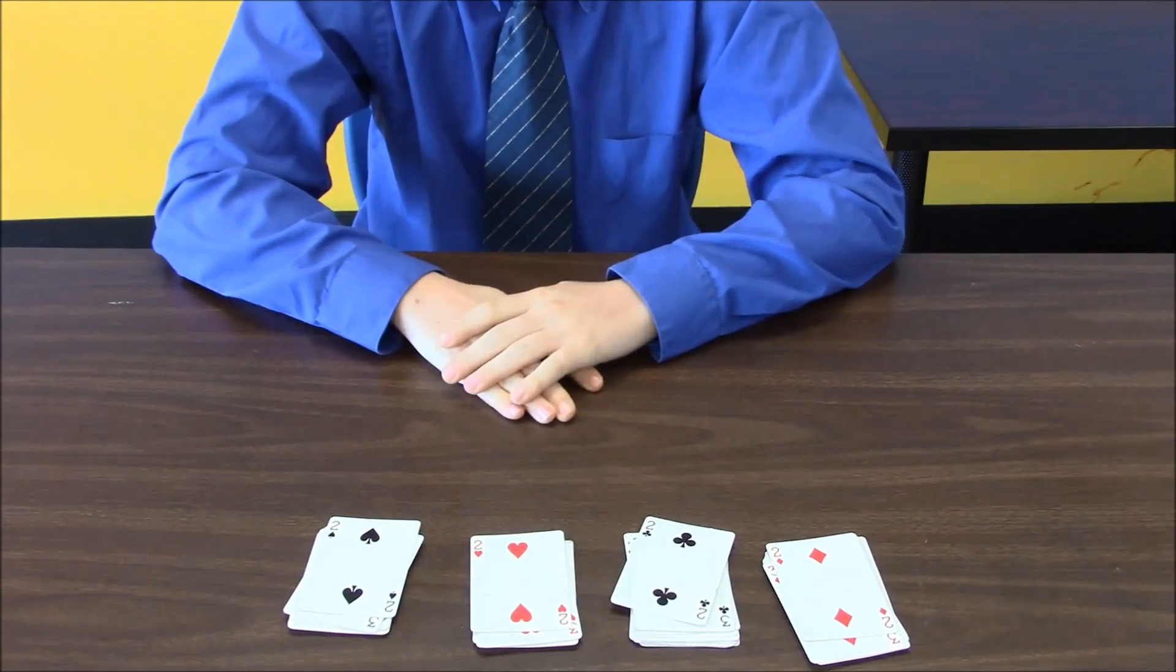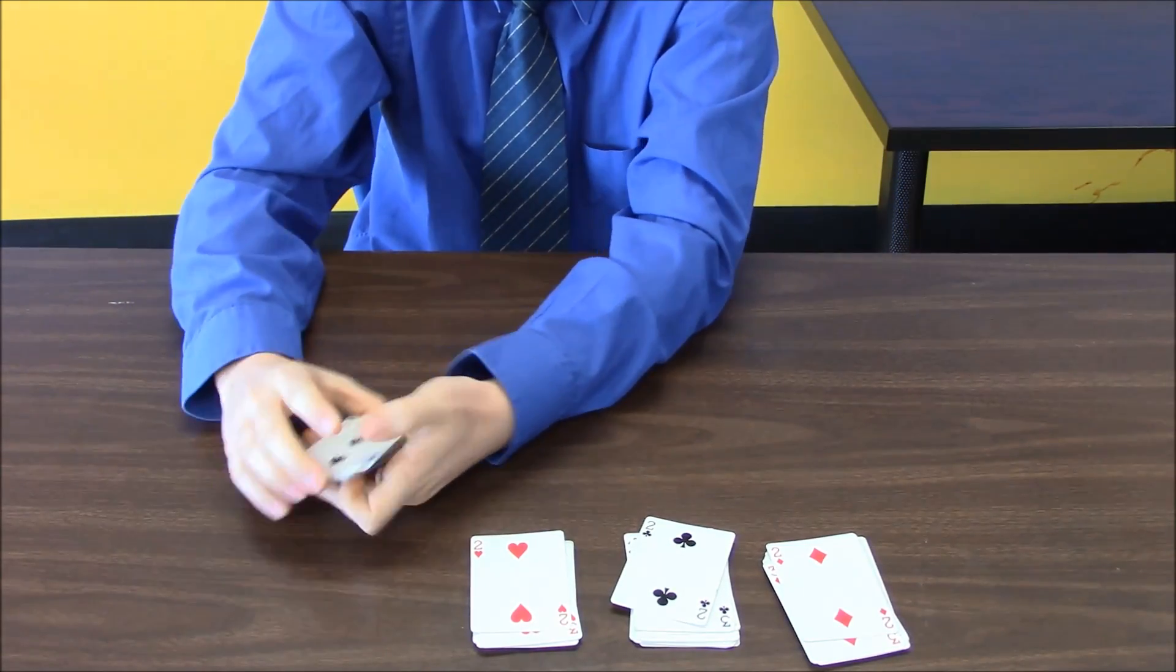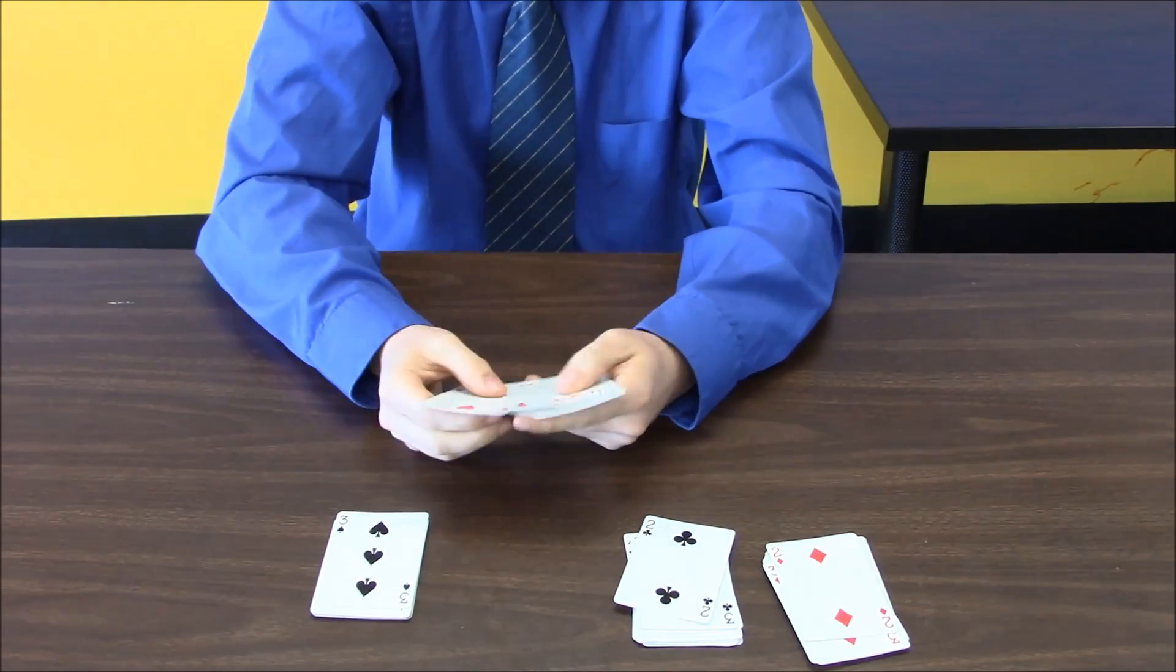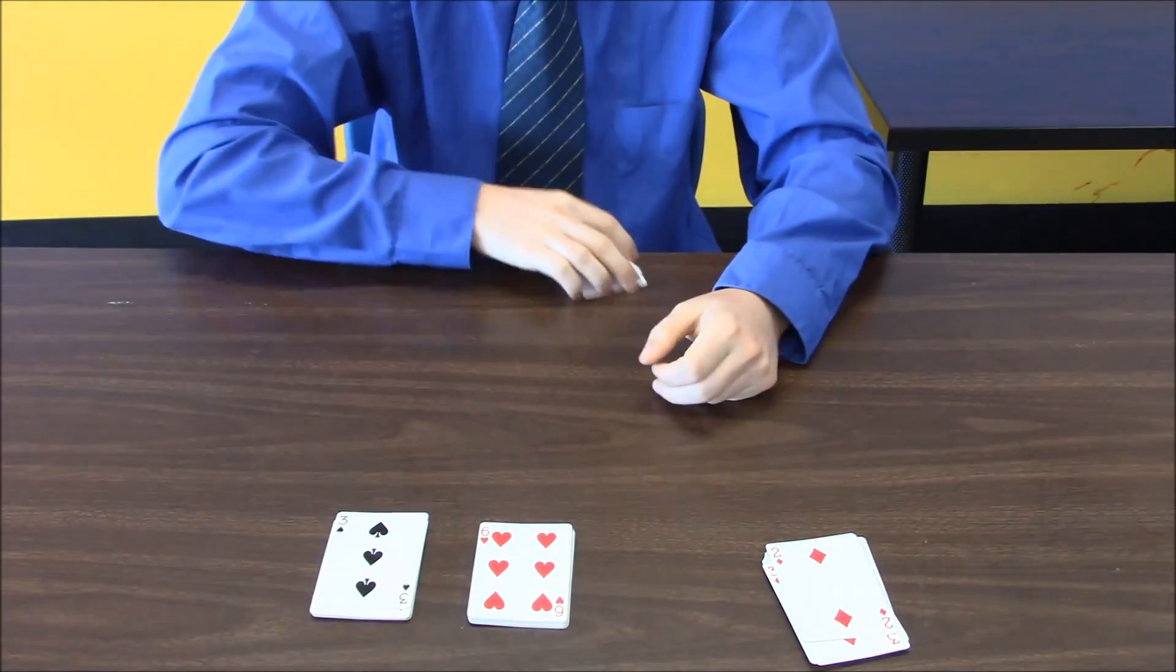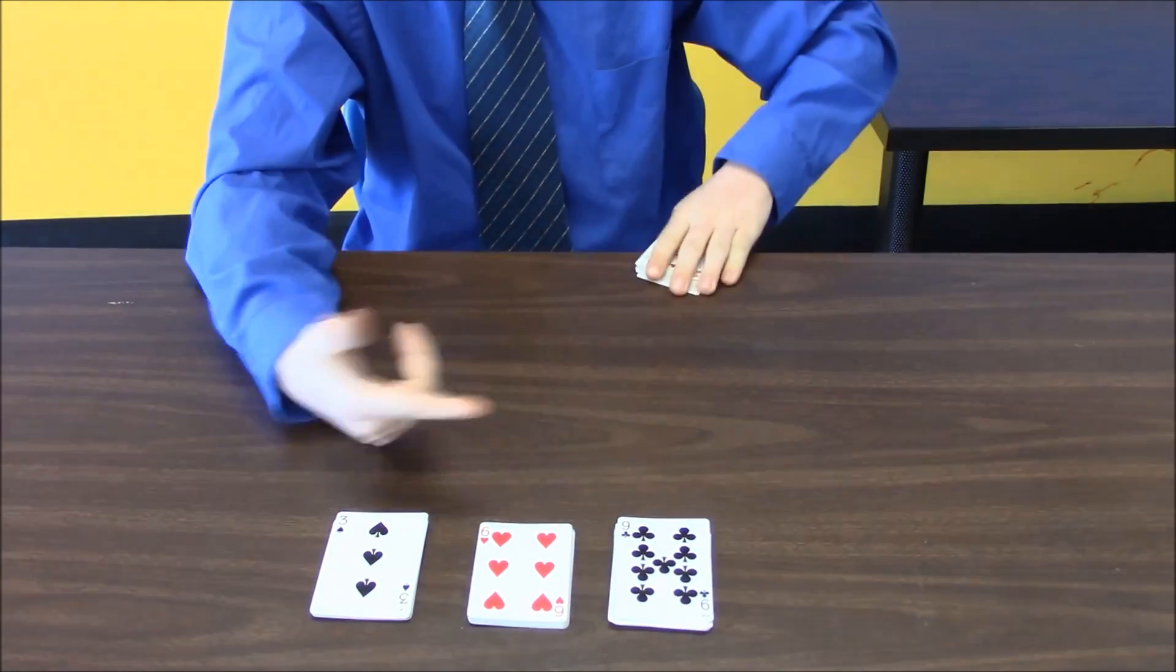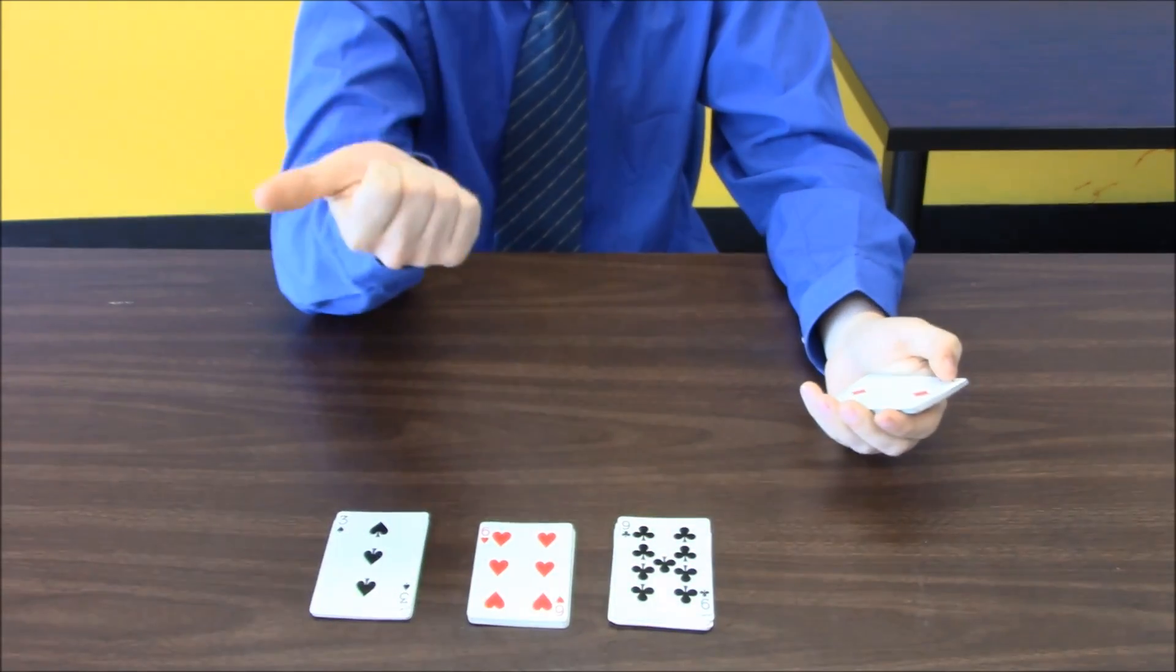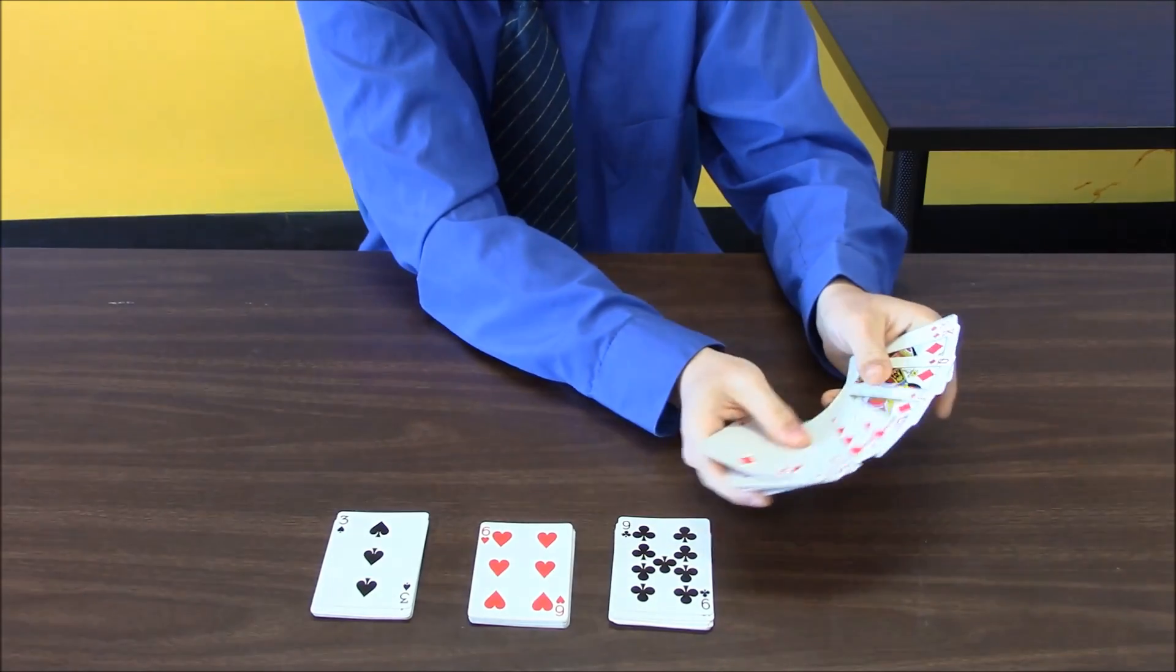So what I'm going to do is for each of the values, I'm going to be adding three. So I'll go three, then to six, then to nine, and then nine plus three is twelve. Eleven would be jack, twelve would be queen, king would be thirteen. So then I'll go to the queen, put it right there.